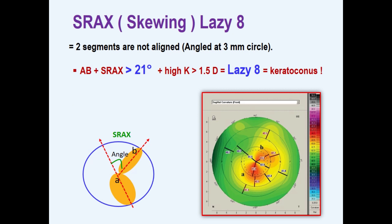Skewing. Skewing means the two segments of the bowtie are not aligned at the 3 mm circuit. The bowtie may be symmetric or asymmetric. Asymmetric bowtie with skewing more than 21 degrees is abnormal.